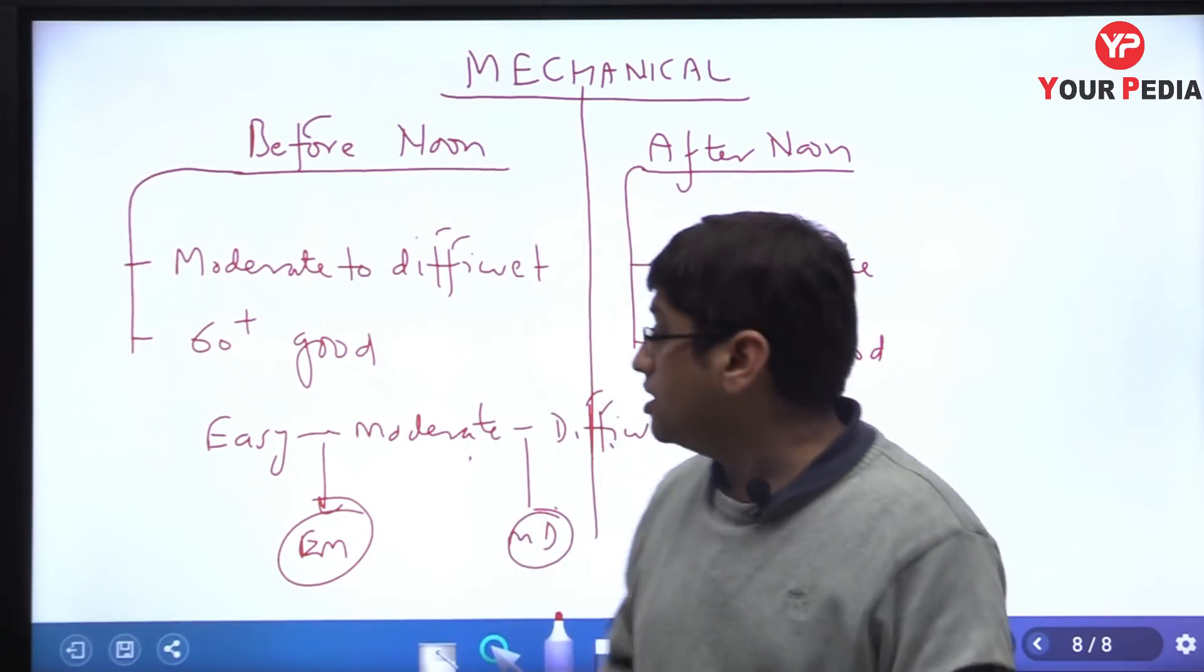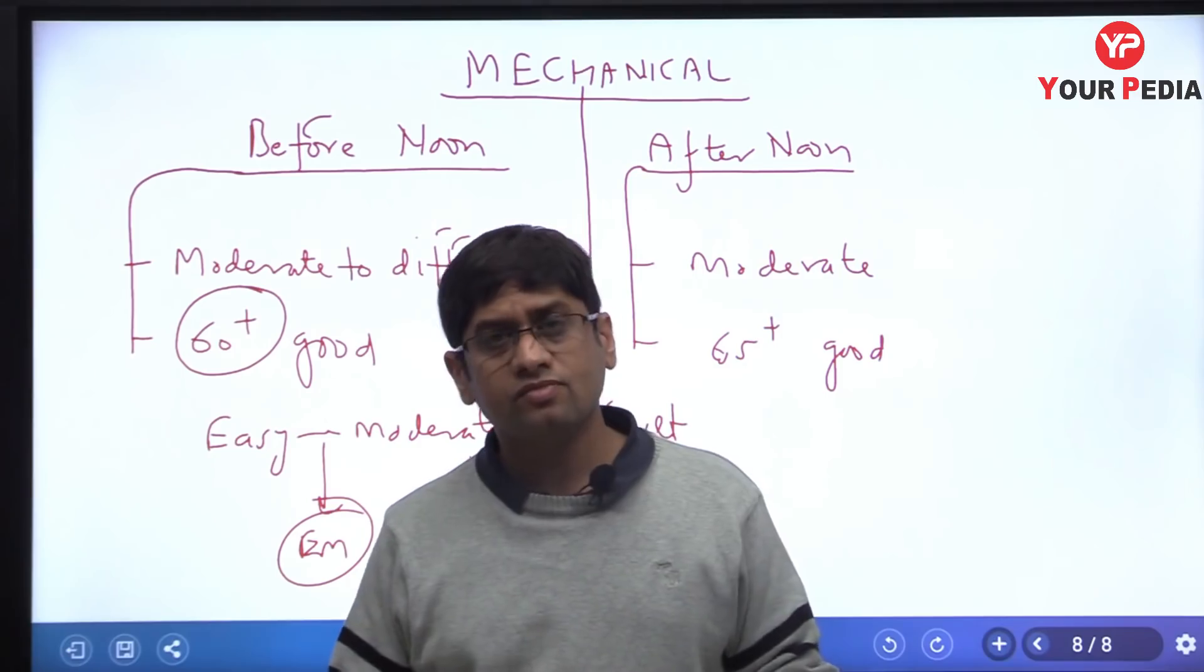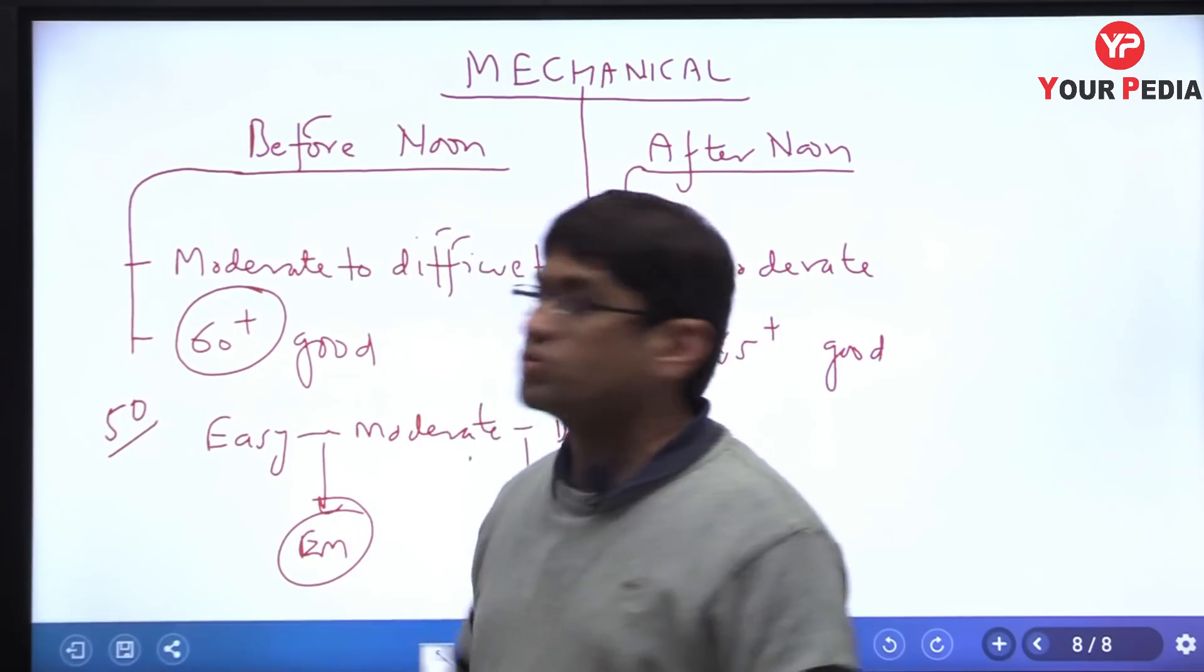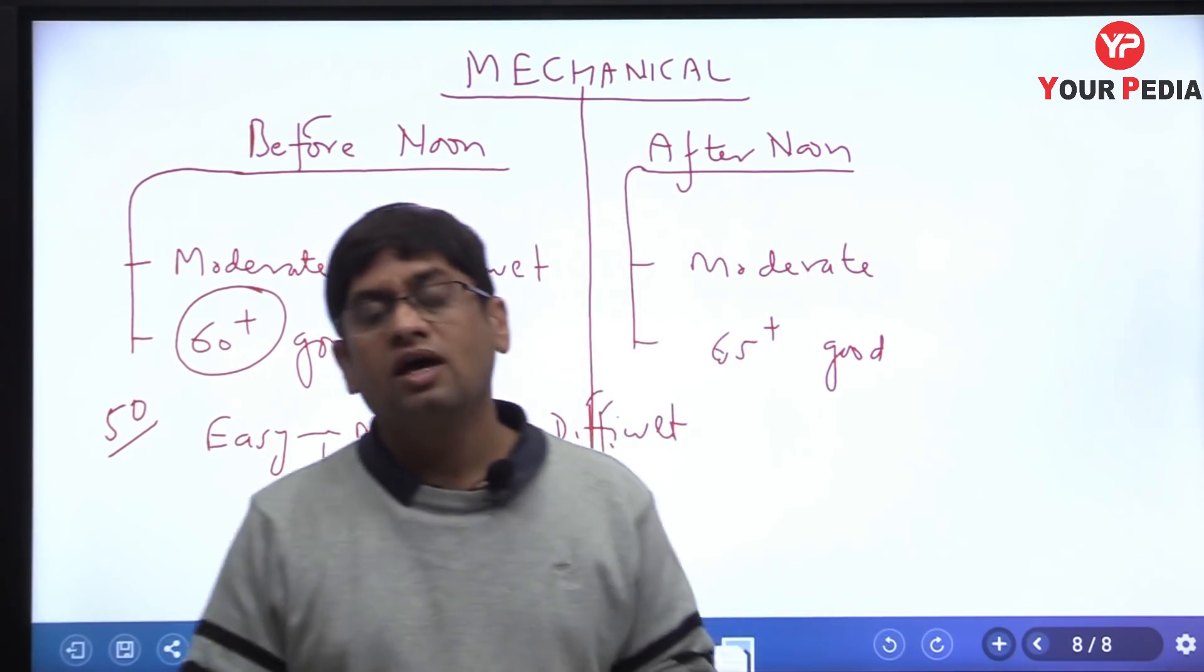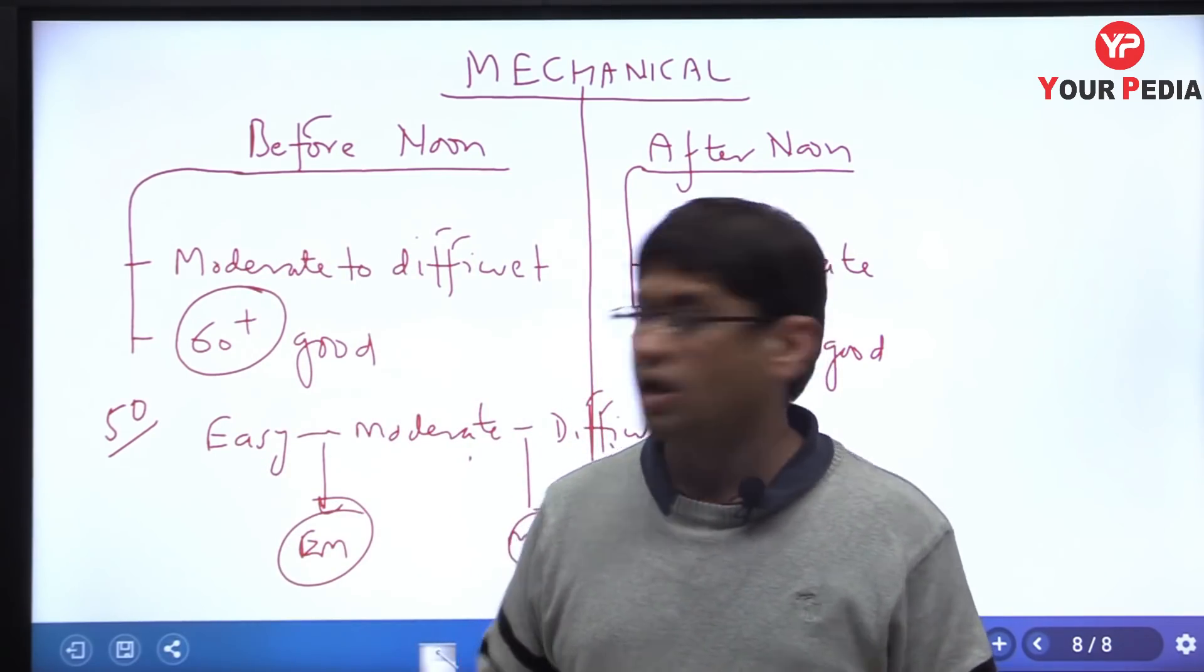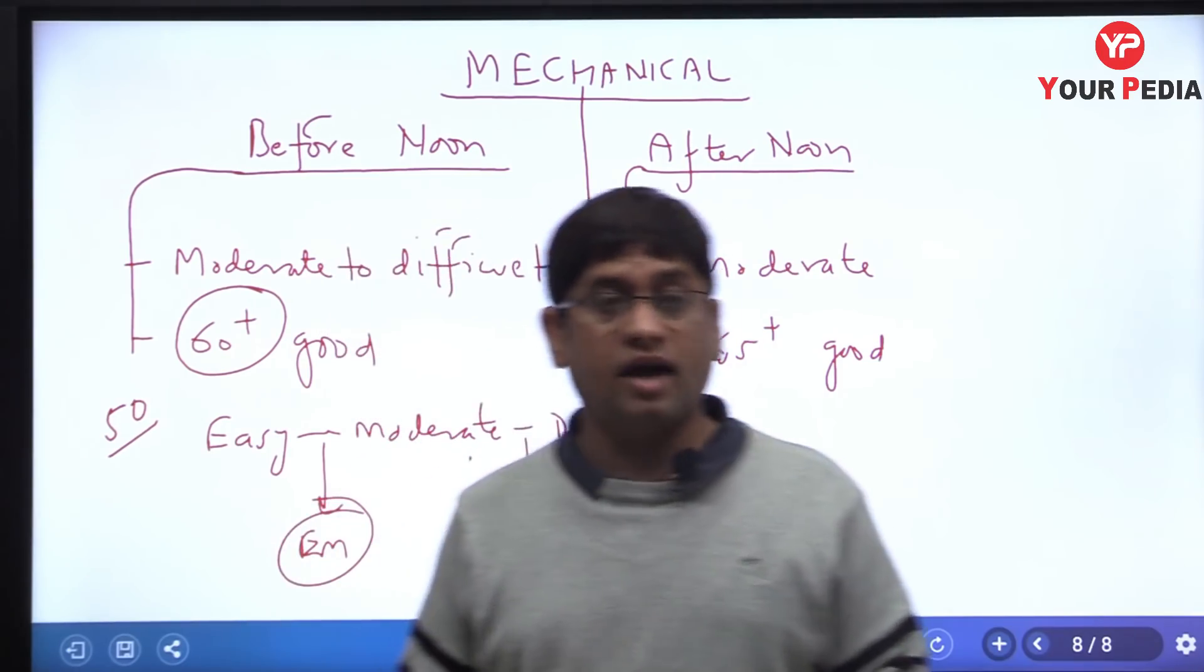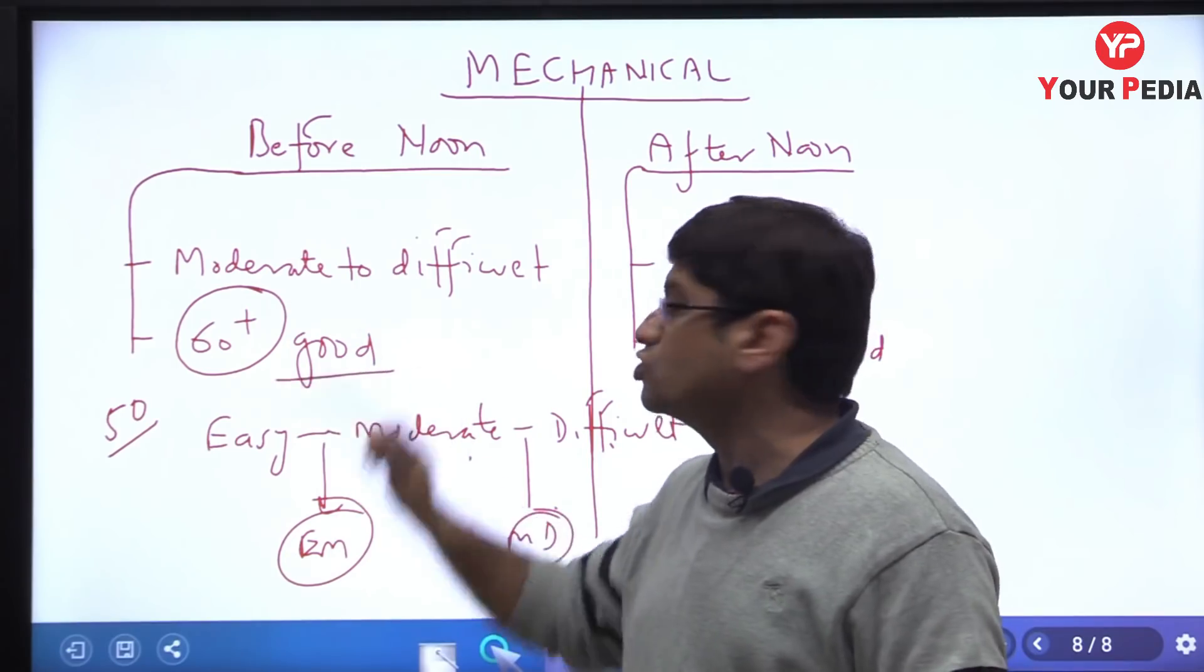That simply means that if general category student is scoring 60 plus marks, and for scoring 60 plus marks, I think you should have good speed or 50 questions attempt hone chahiye aapke. You must have attempted 50 questions and out of 50 questions, your speed must be there 80 percent. So if you have 50 question attempt and your accuracy is good, you may score 60 plus marks.